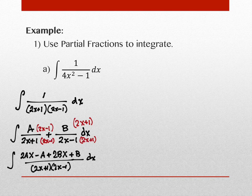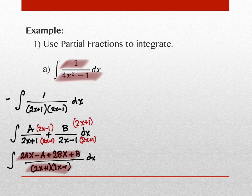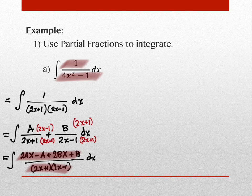If I compare that to where I began, every step along the way is equal to the step before. The denominators are clearly already equal — we separated them and pushed them back together. It's the numerators where we want to focus. So: 2Ax − A + 2Bx + B has to equal the original numerator, since the denominators are the same and the integrals are the same.